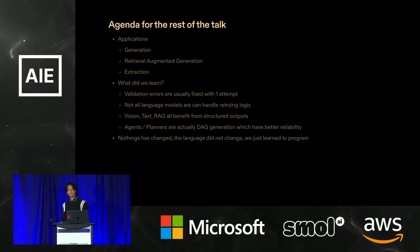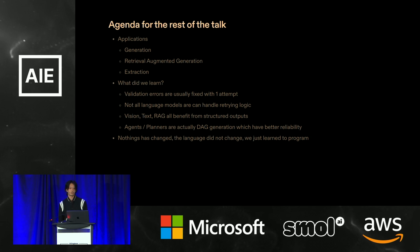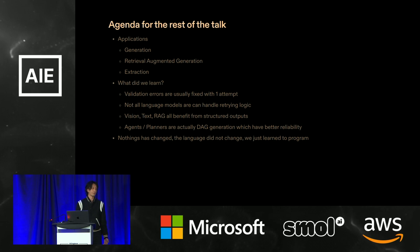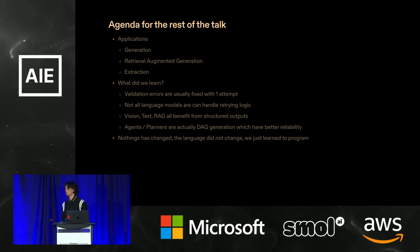The rest of this talk is going to cover three things: examples of generation — in particular around RAG and extraction — and then what we learned this year, which is really not that much. Validation errors are very important and can usually fix any errors we have. Not all language models can support retry logic right now, but ultimately, whether you use vision, text, RAG, or agents, they all benefit from structured outputs. The real idea is we're going to be programming with data structures — something everyone knows how to do — rather than begging and praying to the LLM gods. Nothing really has changed; the language did not change. All we learned to do is relearn how to program.